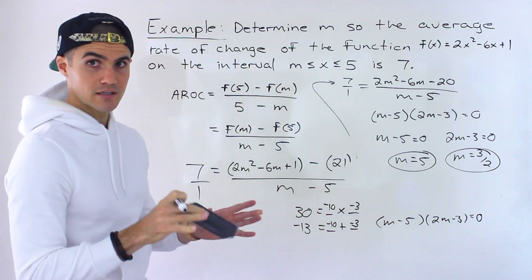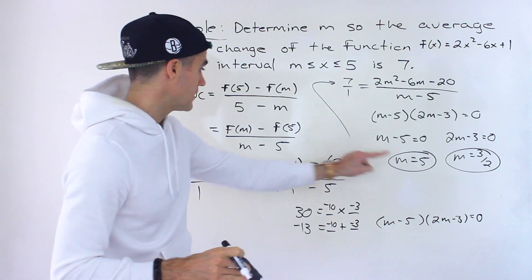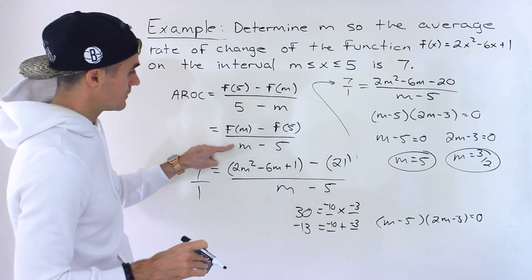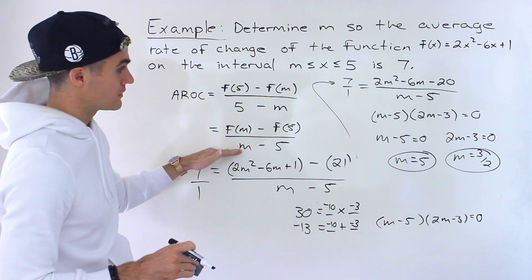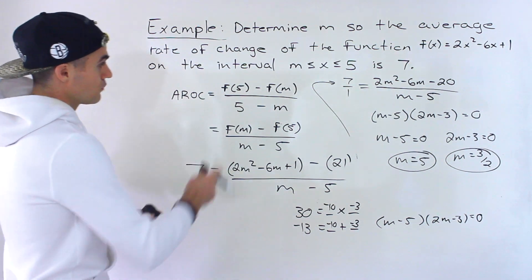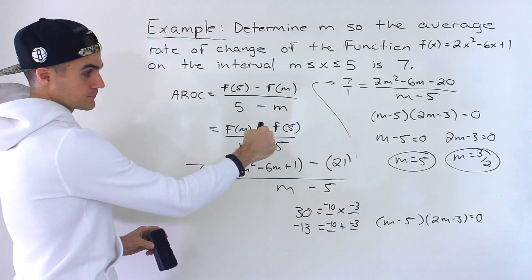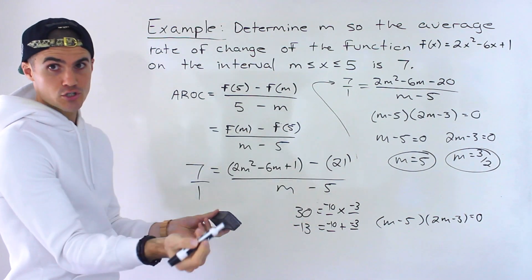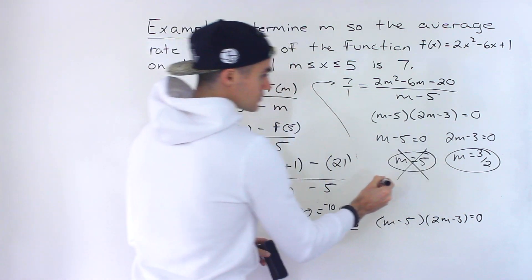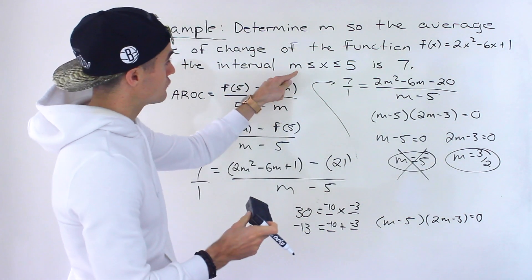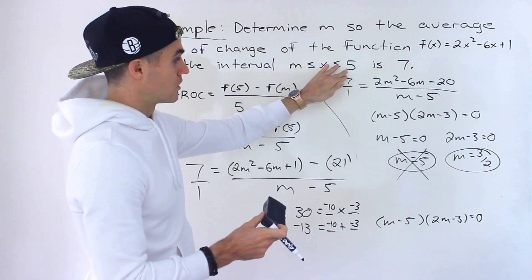Now, notice that in this particular question, this is not going to work. Why? Because you can't have a 0 in a denominator. It would make it undefined. Right? So over here, m equaling 5, that's actually a restriction. m can't be 5. So we would actually just ignore this solution. It also wouldn't make sense taking the average rate of change from 5 to 5. Right?